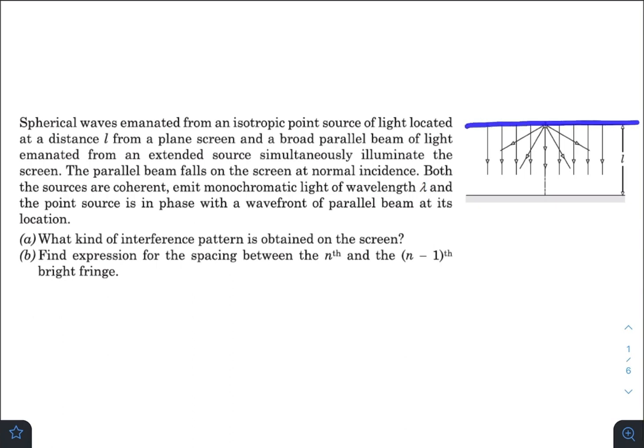So this wavefront and the light coming out from this point source will have the same phase. What kind of interference pattern is obtained on the screen? And the second one is, find the expression for the spacing between nth and n minus 1th bright fringe.